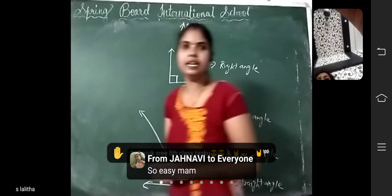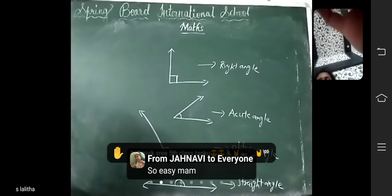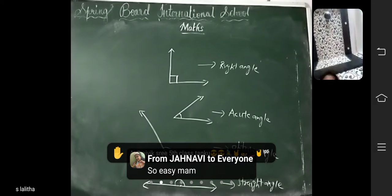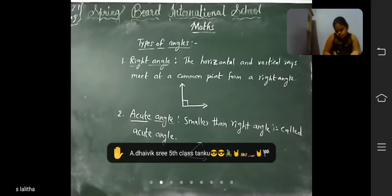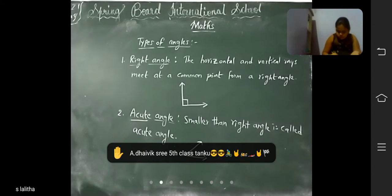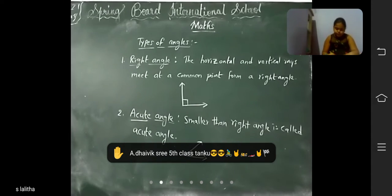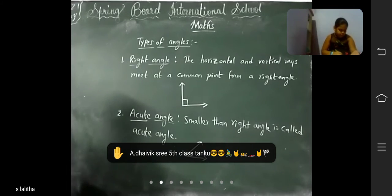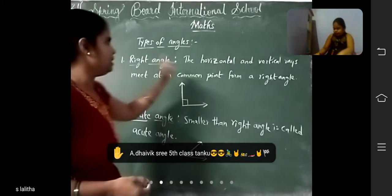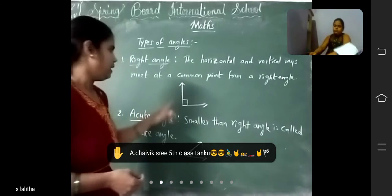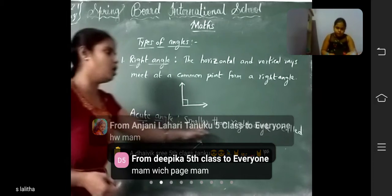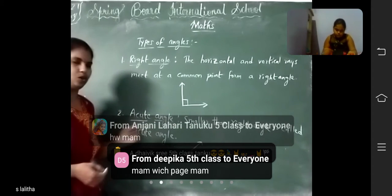Did you understand? So what are the types of angles? Right angle — horizontal and vertical rays meet at a common point to form a right angle. Smaller than a right angle is called an acute angle.